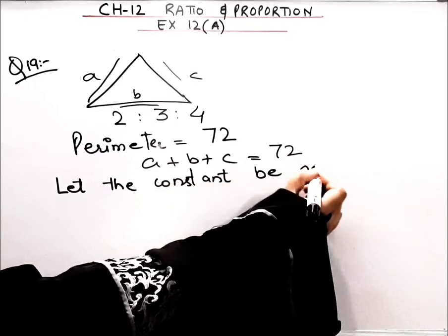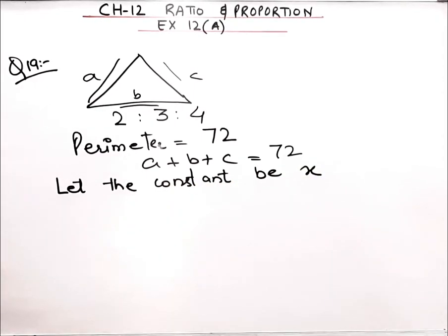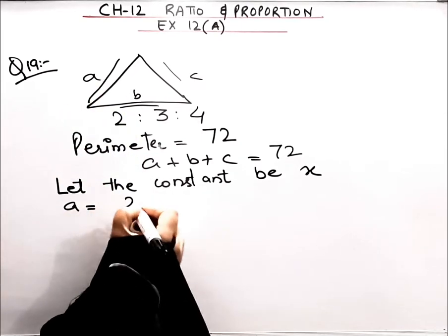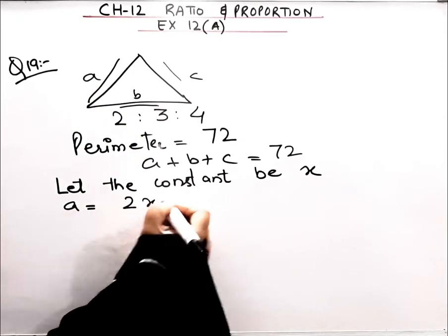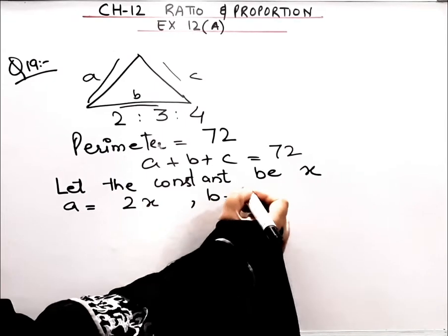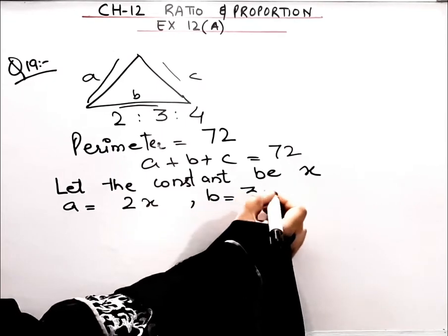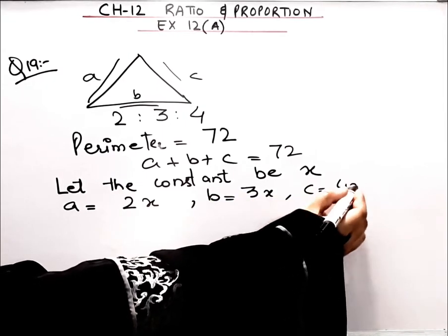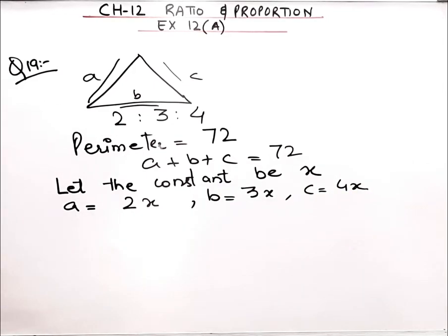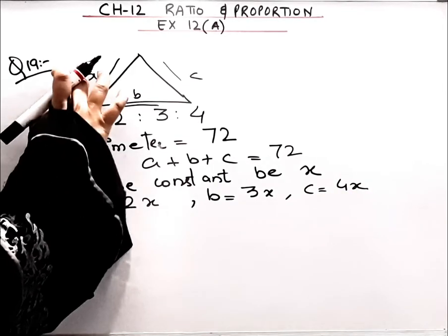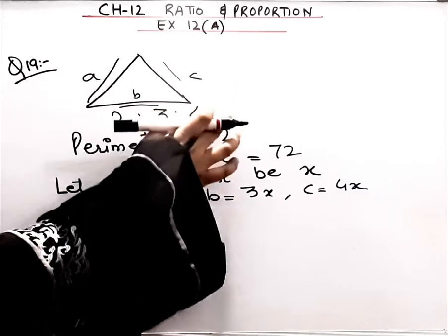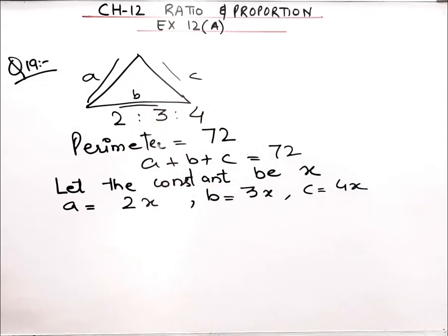We have assumed the constant to be x. So side a will be 2x, side b will be 3 into x, and side c will be 4 into x. So a = 2x, b = 3x, c = 4x.